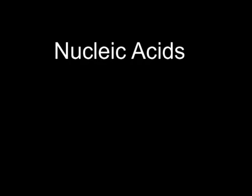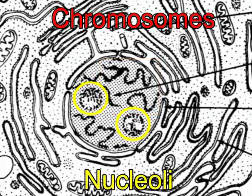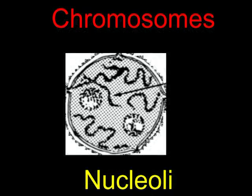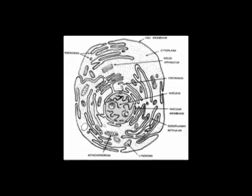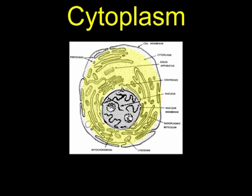Two types of structures found in the nucleus are chromosomes and nucleoli. Chromosomes can be seen clearly only during cell division — they are composed of both nucleic acid and protein, and they contain genes. Genes are the basic units of heredity passed from parents to children and guide the activities of each individual cell. The cell membrane surrounds and separates the cell from its environment, allowing materials to pass through as they enter or leave. The fluid-like material inside the cell but outside the nucleus is called the cytoplasm.